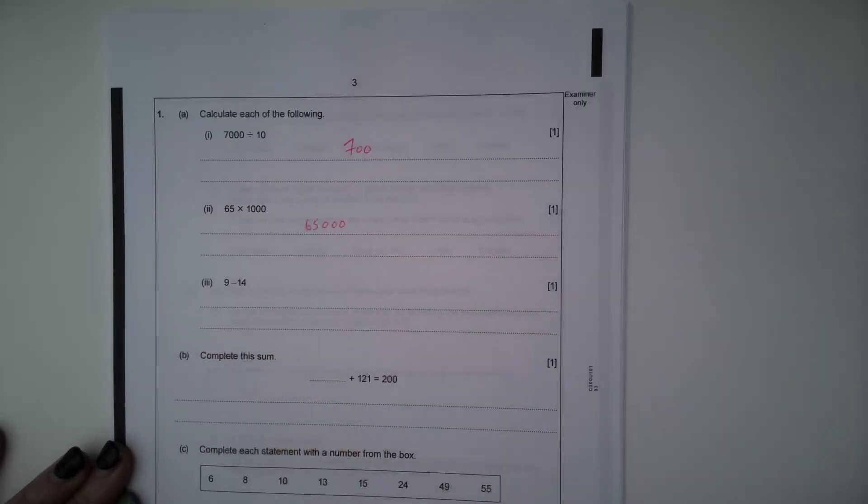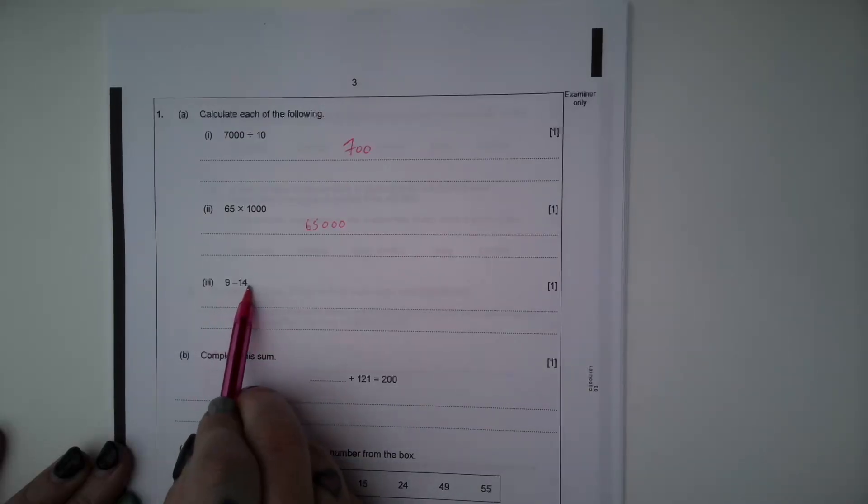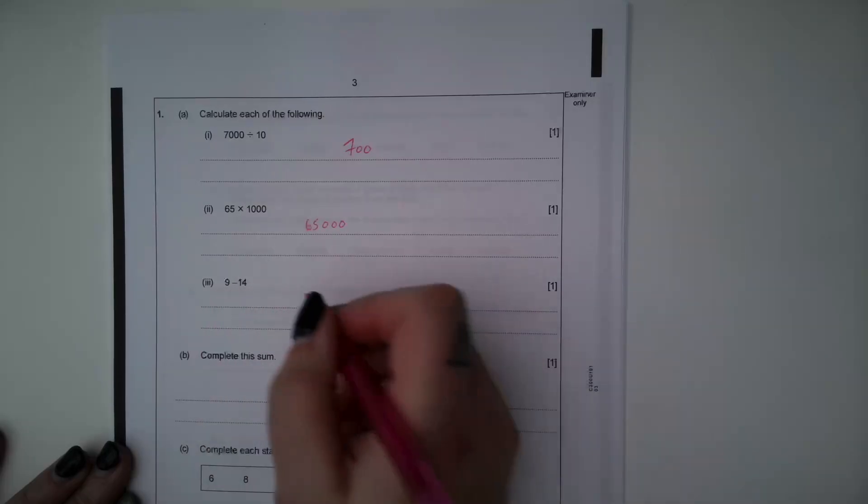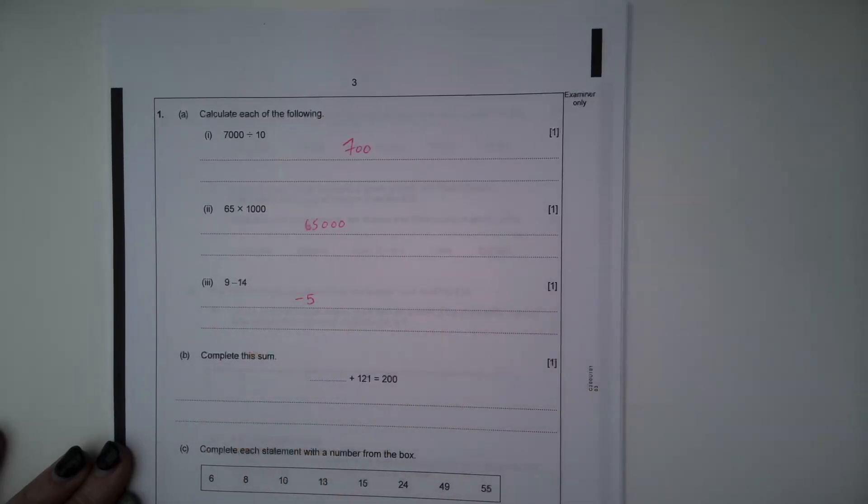Part 3, 9 subtract 14. So we are taking 14 away from 9. 9 is a smaller number, so we are going to go past 0 into the negative. So 9 subtract 14 is negative 5.